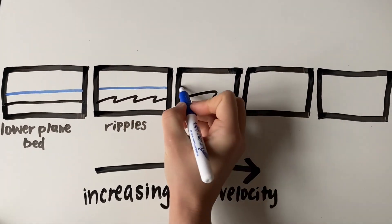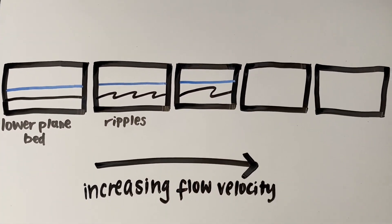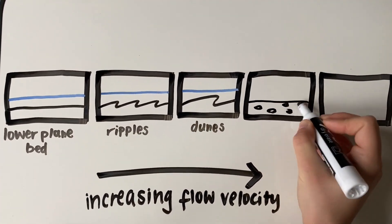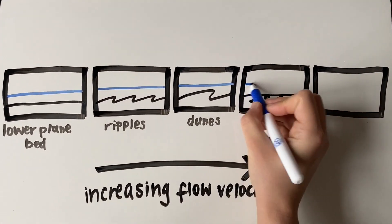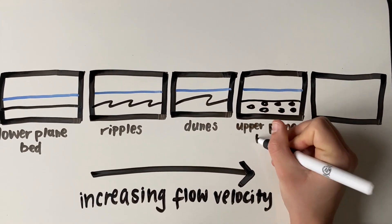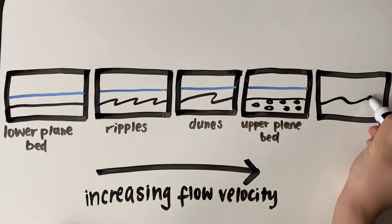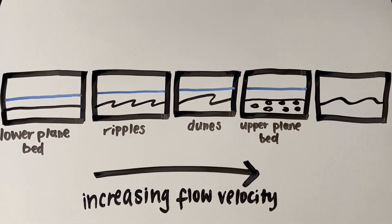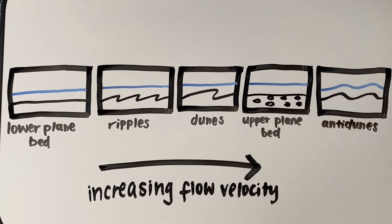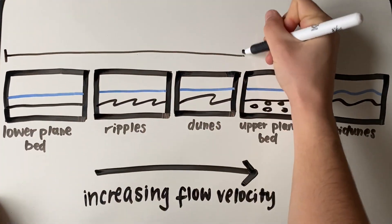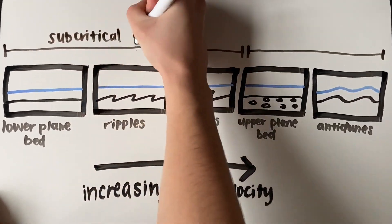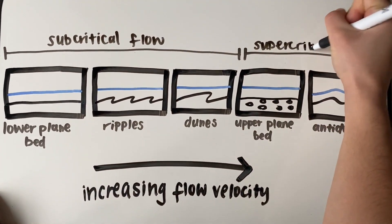Upper flow regime bedforms, which form under faster or supercritical flow, include upper plane beds, which are typically made of coarser grains than lower plane beds — like gravel or coarse sand — because the water is moving faster and therefore able to carry and deposit larger pieces of sediment. We also find anti-dunes, which are very unusual bedforms that actually migrate upstream under very fast flow conditions.